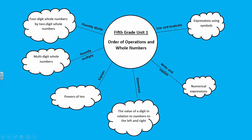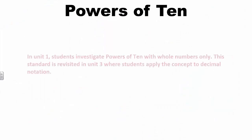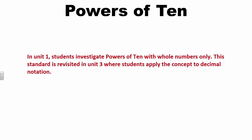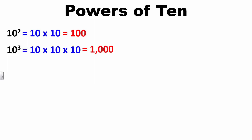In the next segment, we'll look at Standard NBT-2: Explain patterns in the number of zeros of the product when multiplying a number by powers of 10 using whole number exponents. In Unit 1, students investigate this concept with whole numbers only, revisited in Unit 3 with decimal notation. Students learn that 10 squared equals 10 × 10 = 100, and 10 cubed equals 10 × 10 × 10 = 1,000. Students should have experiences connecting the pattern of zeros in the product when multiplying by powers of 10, as it is a shift in the digits.